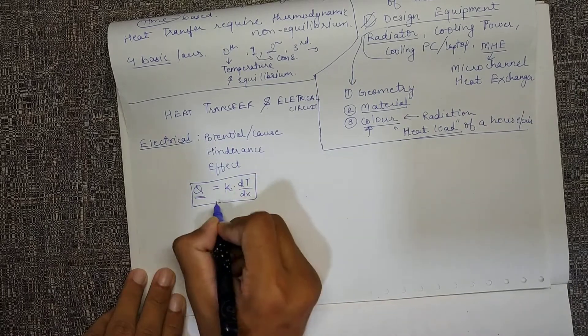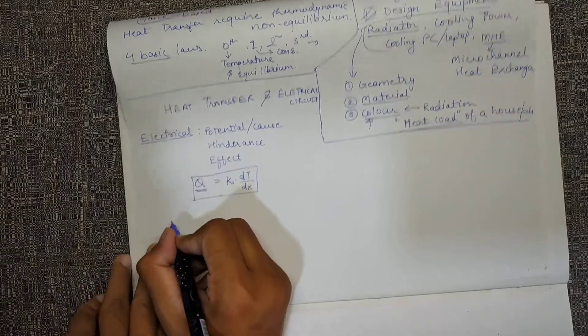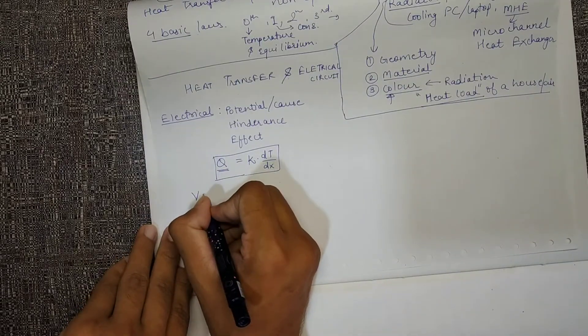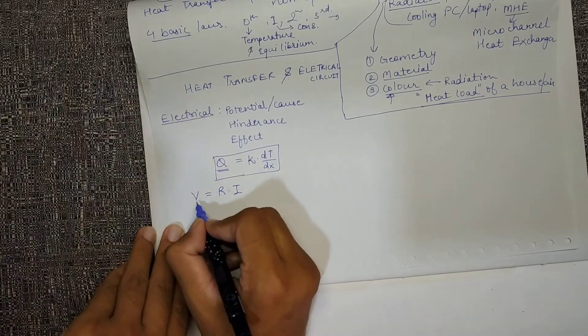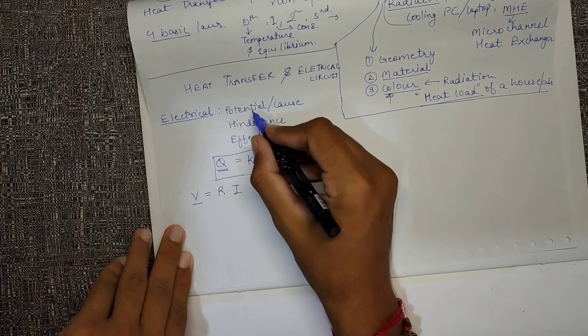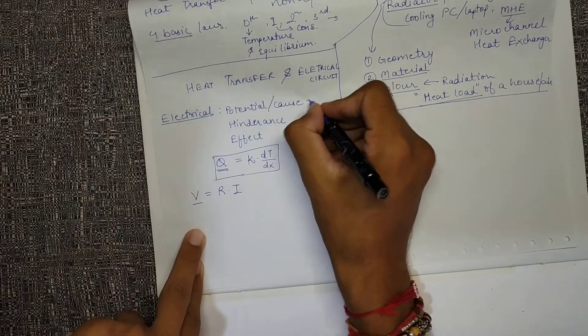Let's understand what was happening with electrical circuits. There we had V equals R into I. V is a kind of potential causing something to happen, so V is the cause.